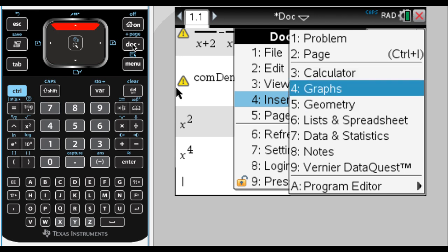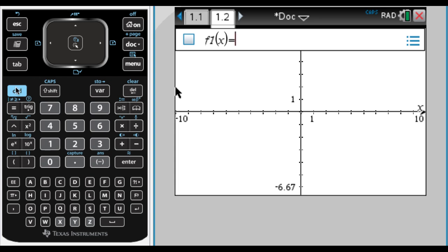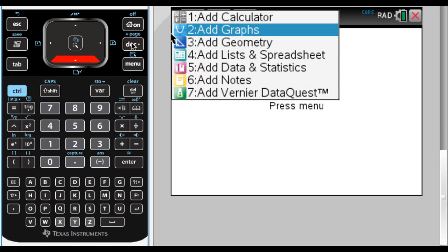So I would pick Graph. But if you don't want to do that, another option is to press Control and then Doc, and then you just pick what you want.